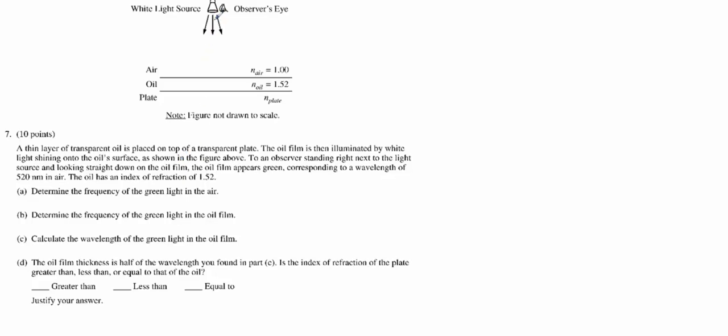We've got a white light source shining down on an air to oil to plate interface. And we're standing next to that light source looking down at that interface. So we're really seeing reflected light eventually by the time it gets to our eyes. And we are noticing that the color appears green. Even though it was white light we shined, we're noticing the green color.